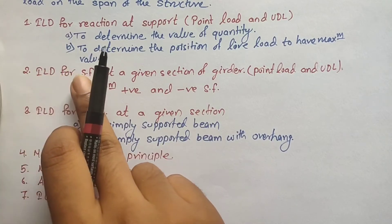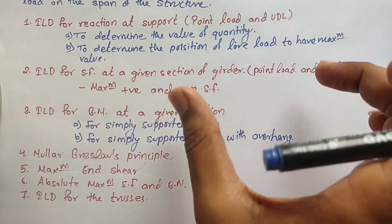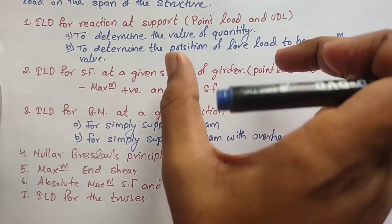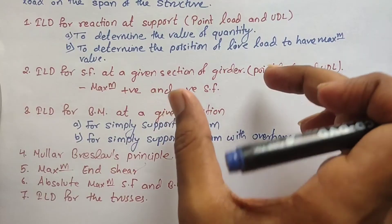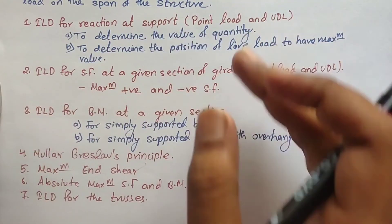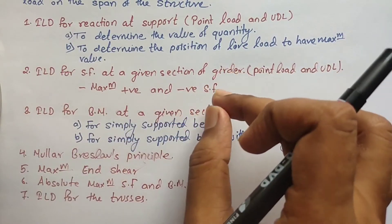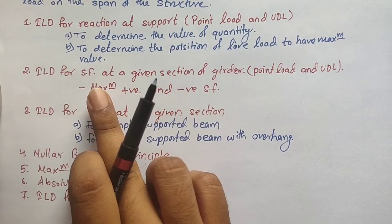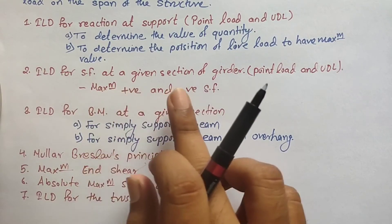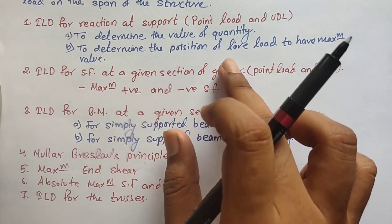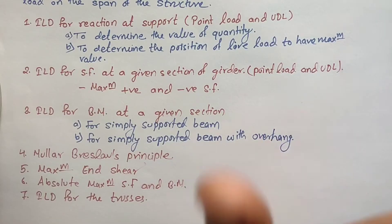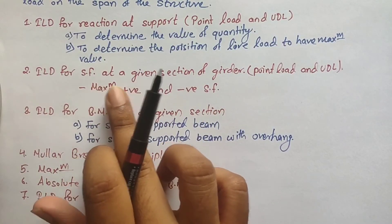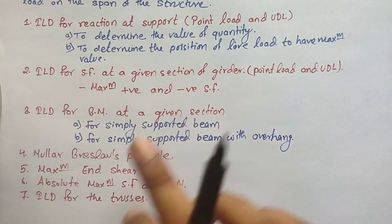The second topic is the Influence Line Diagram for shear force at a given section. We will be given a span of a beam and asked to calculate the shear force at a specified location from the left or right end. There is also another type of question where we calculate the maximum positive shear force and the maximum negative shear force, which is different from simply finding the shear force for a given load.